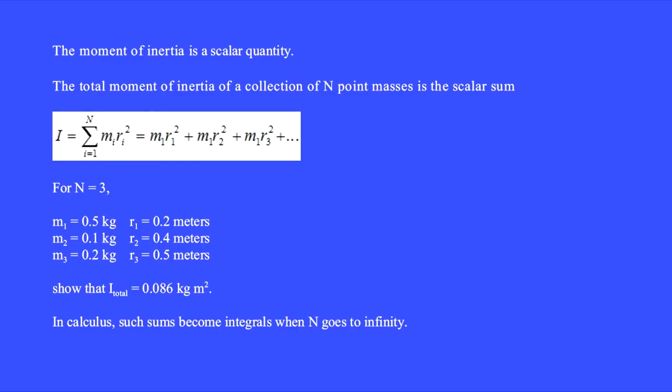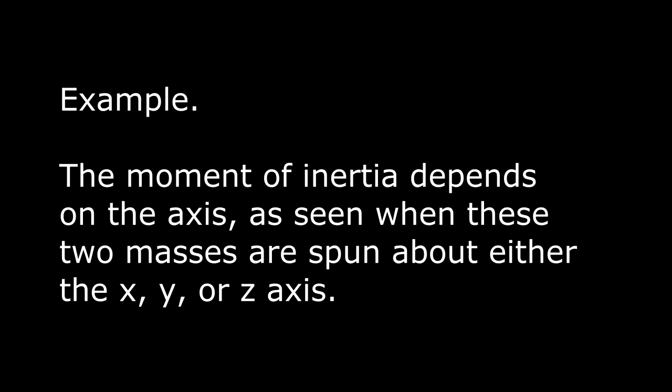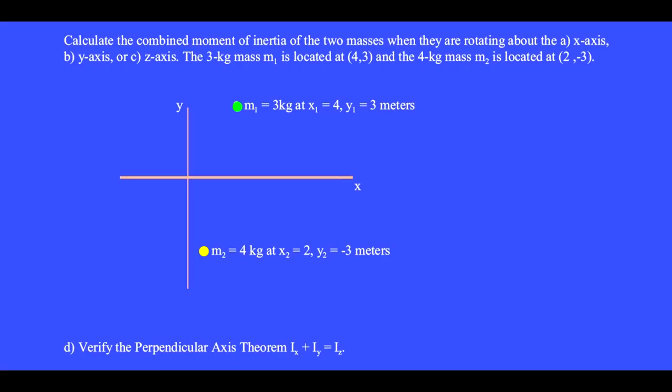In calculus, such Riemann sums always go to integrals when n goes to infinity. Each of these two masses will orbit either the x, y, or z axis. Calculate the moment of inertia of the two masses when spun about the x, y, or z axis.